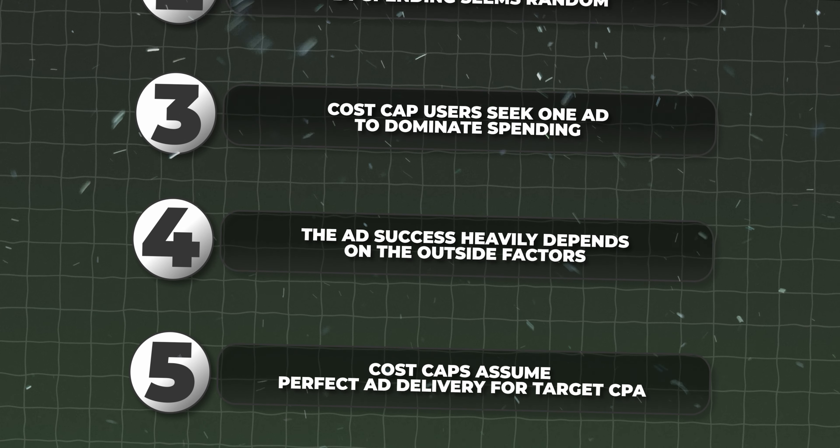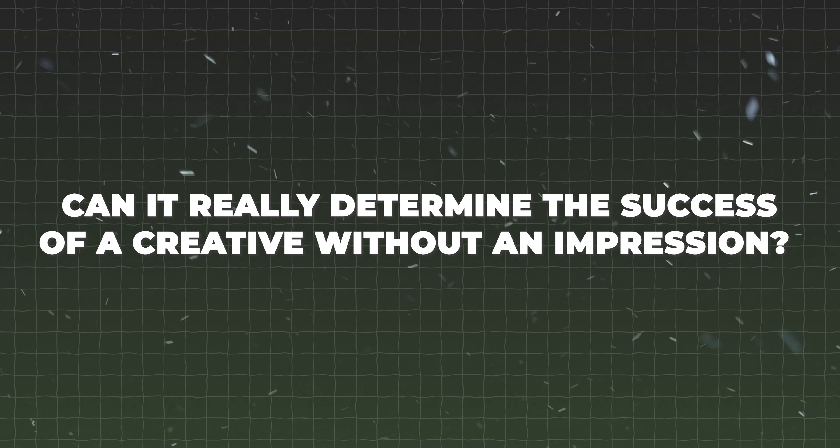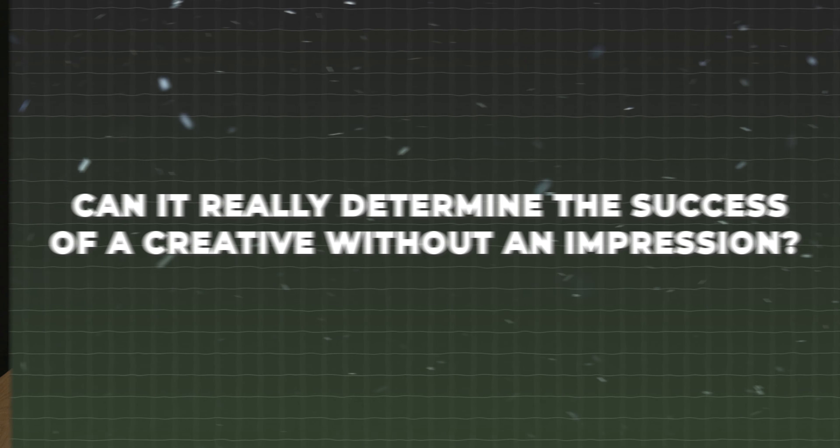Number five, in order for cost caps to work, we assume that Facebook delivers the ad in the perfect environment and can spend only if it can deliver results under the target CPA. But there are multiple times I saw an ad set spending while still not delivering results under the target. It sounds great in theory, but it doesn't always work in practice — I've audited multiple fully cost-capped ad accounts that had a CPA way, way higher than what the bid was. I would really like to hear from the cost cap gang what the reason is for that. Although Facebook is super robust, can it really determine the success of a creative without an impression? I'm not so sure.